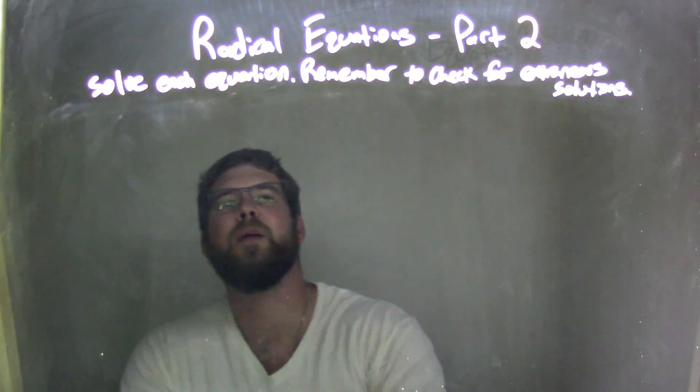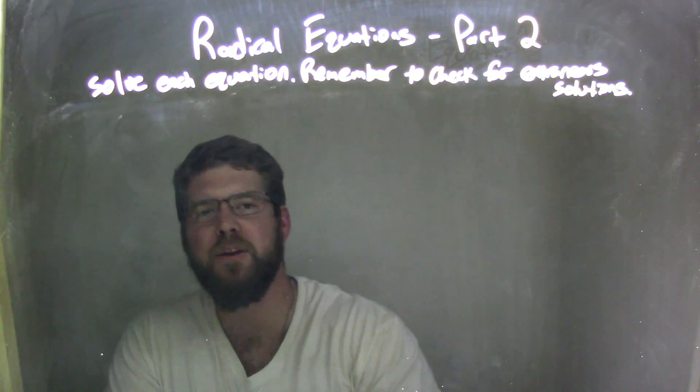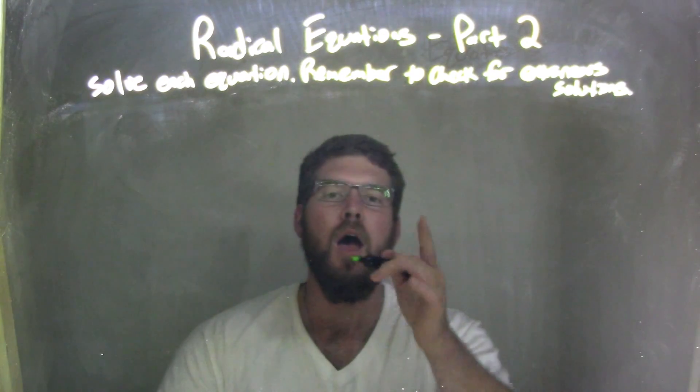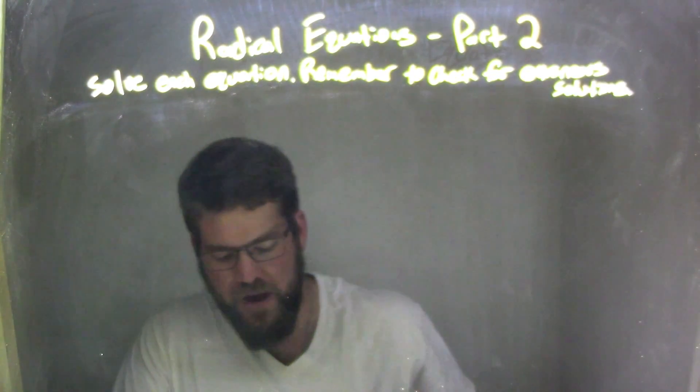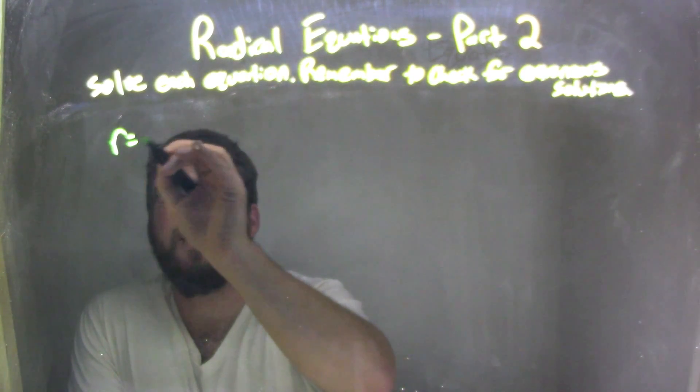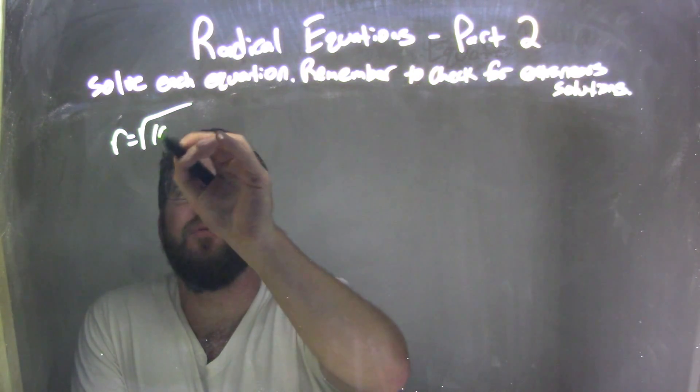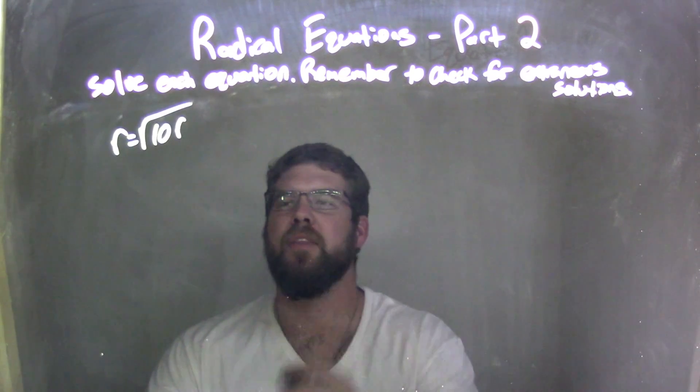Hi, I'm Sean Gannon, and this is MinuteMath. Today we're going to learn about radical equations. I'm going to solve each equation, but we're going to remember to check for our extraneous solution. So if I was given this whole problem here, r equals the square root of 10r.